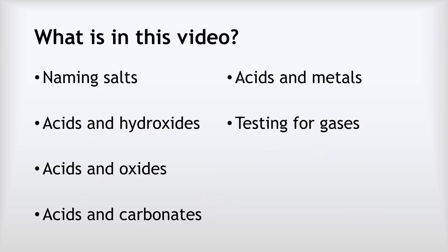In this video, we're going to start by looking at how we name different types of salts. Then we'll look at the reactions of acids with metal hydroxides, with metal oxides, with metal carbonates, and just with pure metals. And finally, we'll look at how we test for different gases.